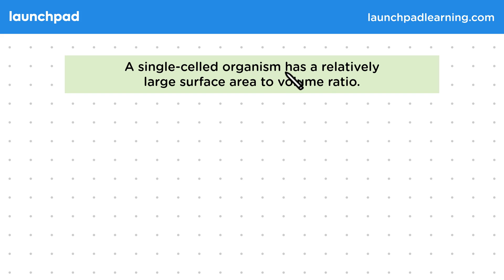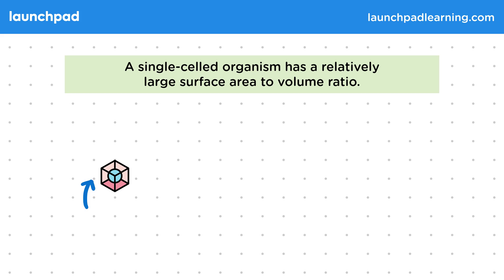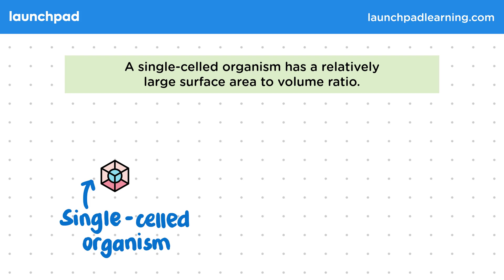A single celled organism has a relatively large surface area to volume ratio. This simple diagram represents a single celled organism, which has a large surface area to volume ratio of 6 to 1.